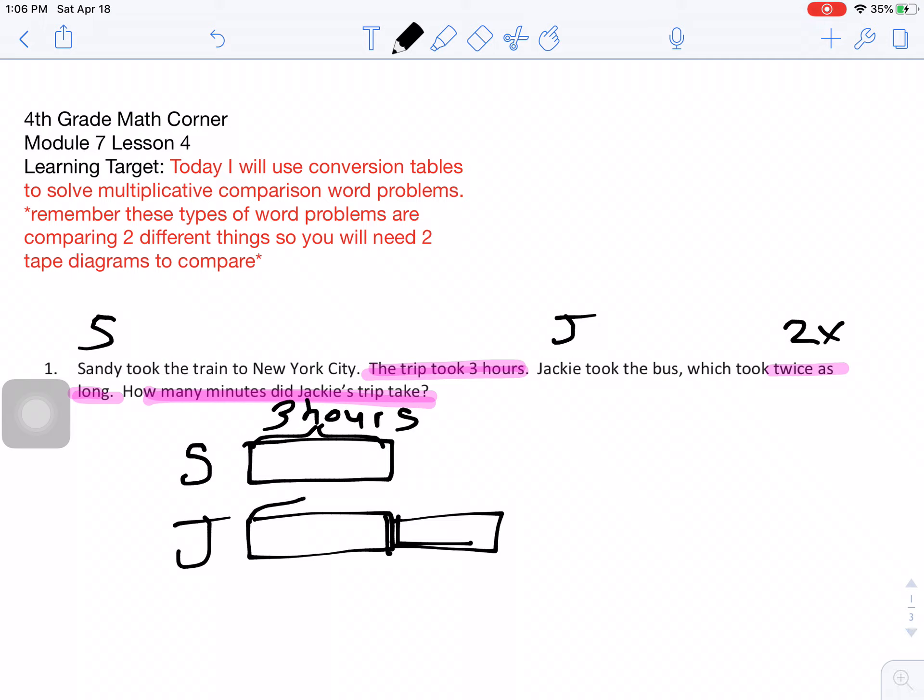Two times. So that means this is the same, which was three hours. And then this is double it, or two of those. So if this side is three, then this side is also three. So all I'm going to do to find Jackie's is I'm going to go two times the three hours. Or I could have done three plus three. And that is six hours.